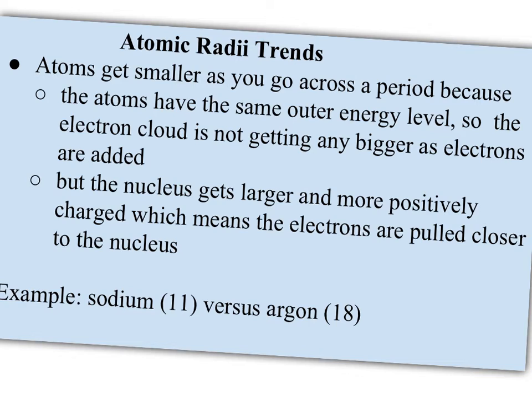So then what happens as you go across a period? As you go left to right across a period, the atoms actually get smaller. Now increasing down a family, that makes sense to people, but the idea that atoms get smaller as you go across a period, this tends to be counterintuitive or the opposite of what a lot of people think.